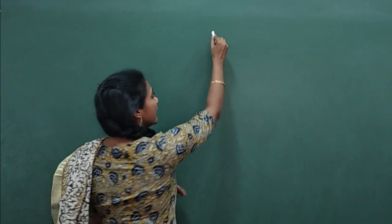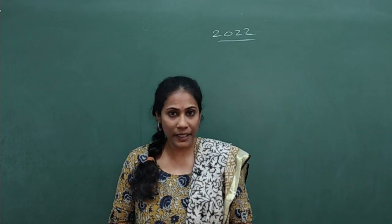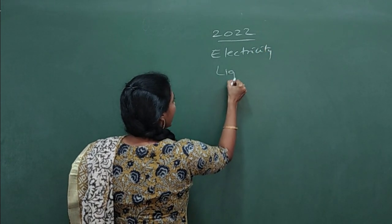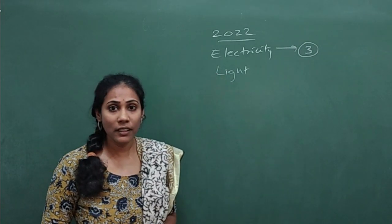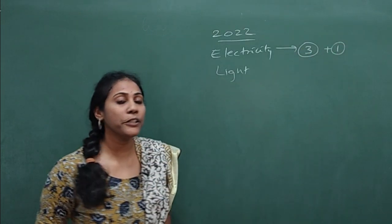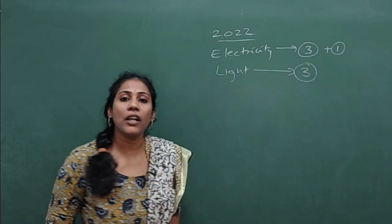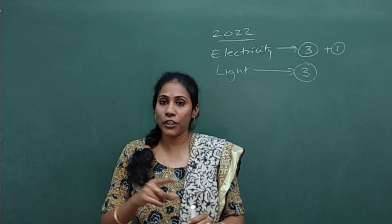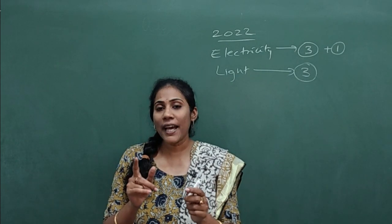For SSLC 2022 board examination, you have two physics chapters from which numericals can come. One is electricity and the other is light reflection and refraction. From electricity, three marks may come for numerical, plus one mark under MCQ. From the light chapter, definitely three marks for solving a numerical. So altogether, six to seven marks you will have to attempt for numericals. If you want to solve these numericals easily with full confidence, you should have four things.